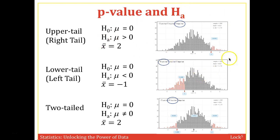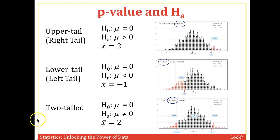To visualize this: if the alternative is greater-than, we look only at the right tail in StatKey. If the alternative is less-than, we look only at the left tail. If the alternative is not-equal-to, that's a two-tailed test — in StatKey you select two-tail, and the p-value is both tails added together.